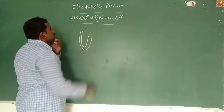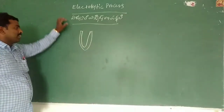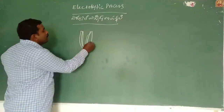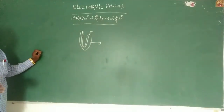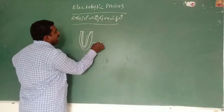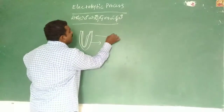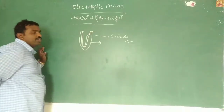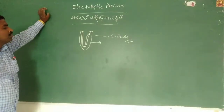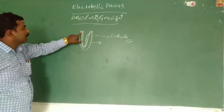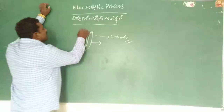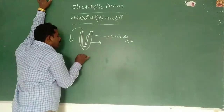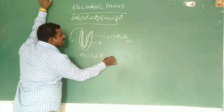In this process, a U-type vessel made of glass is used. This glass U-type vessel acts as a container. Inside there is a lining, and this lining will act as a cathode.